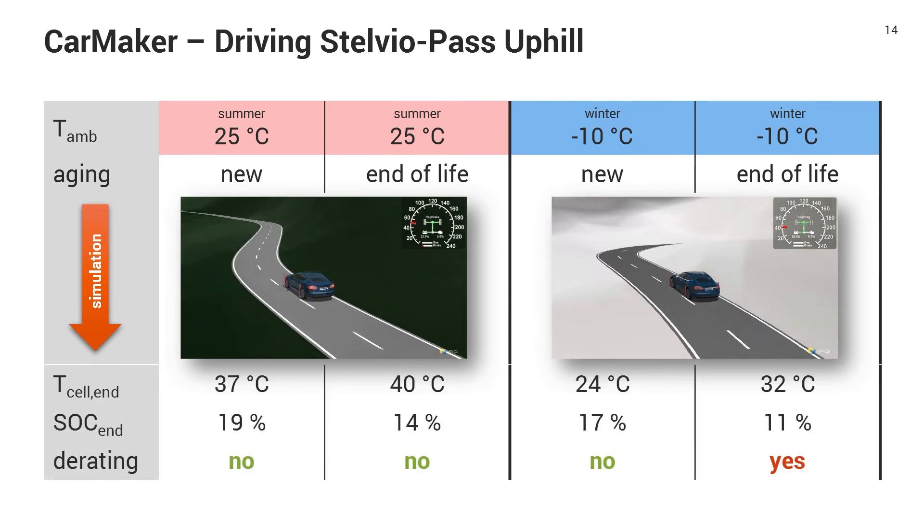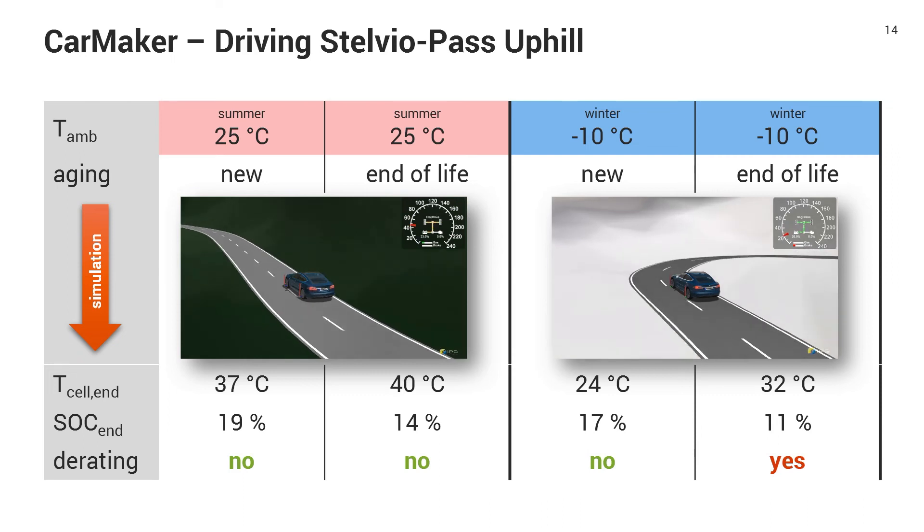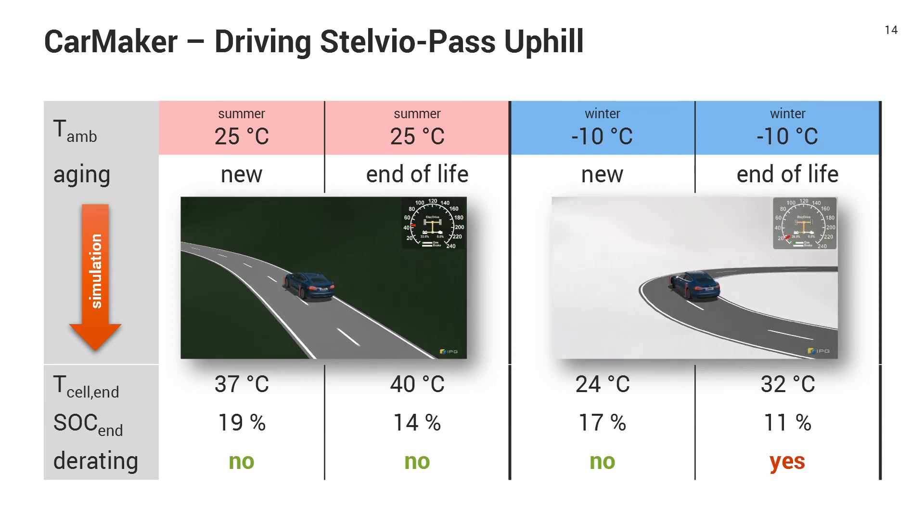So at the end of the simulation, we precisely know the temperature of the battery pack, the SOC at the end of the simulation. And we could also determine if we need a certain derating strategy because the battery cannot supply the power to drive uphill. And this didn't happen in the summer scenario and it even didn't happen for the new cell in the winter scenario. But for the aged cell in the winter scenario, we had to derate the power of the car so that it can fulfill this drive. And this is something really important that you have to keep in mind.